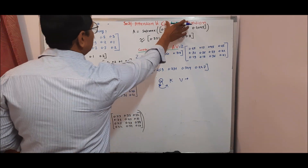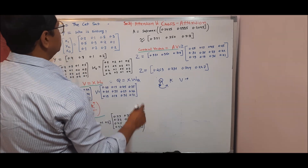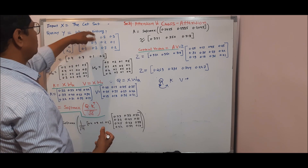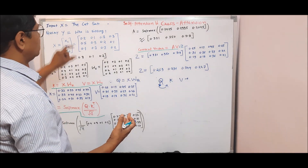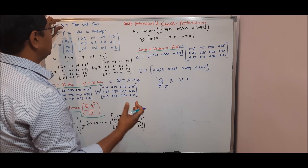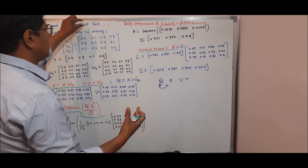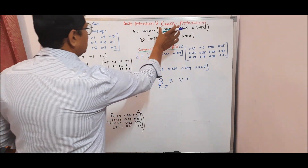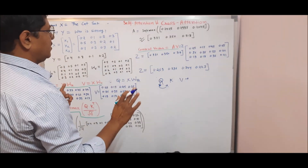In the case of cross attention, we consider the query to come from some outside source. For example, here our query is 'who is sitting?' — and the obvious answer is 'cat is sitting.' Our goal is to check whether, if we apply a similar mechanism, the cat is able to get better attention. Cross attention generally provides such kind of scenarios.